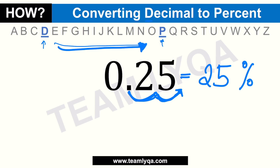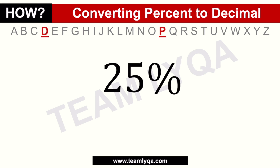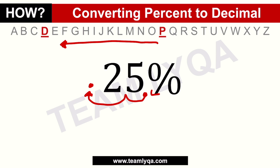Now for percent to decimal — since going from D to P is to the right, going from P back to D is to the left. So if our decimal for 25 percent is here, we move it two places: one, two — to the left. So 25 percent becomes 0.25 as a decimal.